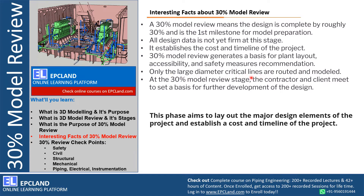The 30% model review generates the basis for plant layout — how equipment will be located, how accessibility will be there, how safety measures are recommended, and many things related to operability and maintainability are finalized at this stage. Only the large bore critical lines are routed — for example, the overhead line from compressor, boiler inlet/outlet, those lines which will impact the overall layout and equipment location. At the 30% model review stage, the contractor and client meet to set a basis for further development of the design. This phase aims to lay out the major design elements of the project and establish a cost and timeline, which is why 30% model review has very good importance in the overall design phase of any project.